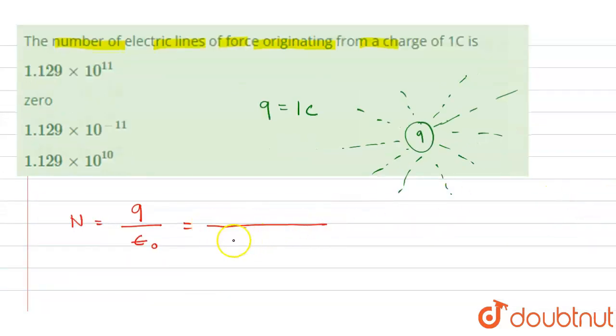ε₀ equals 8.85 × 10⁻¹², and the value of q is given as 1 coulomb.